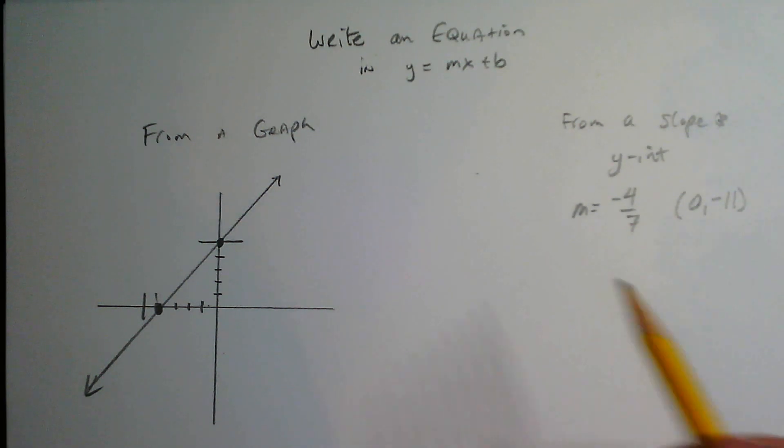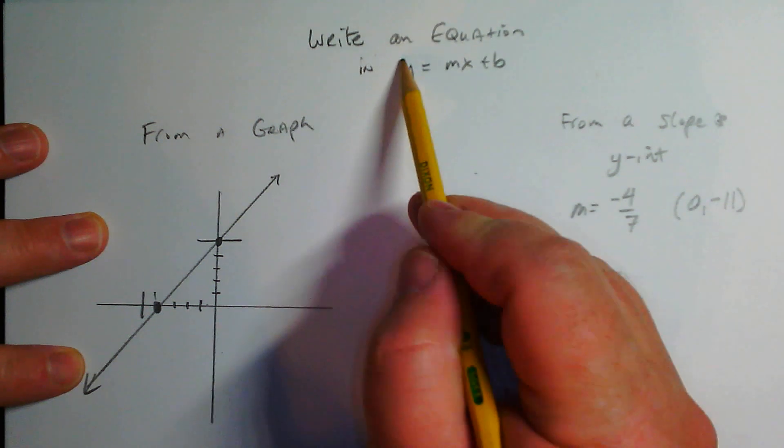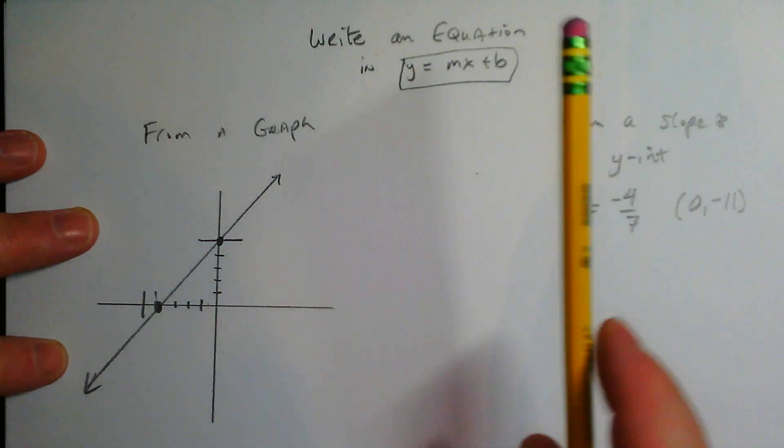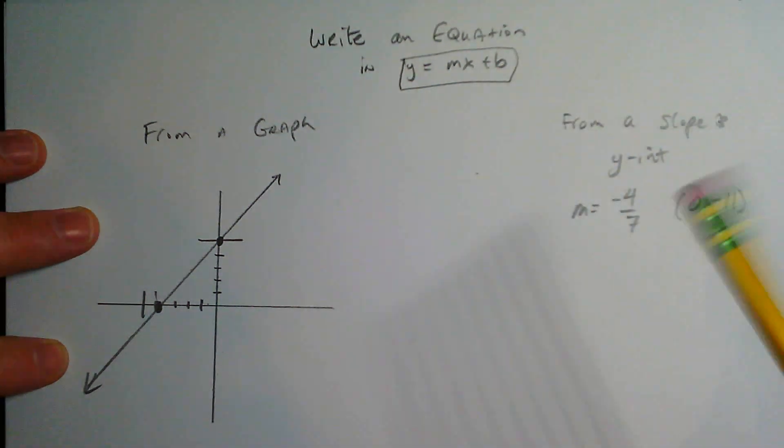Alright ladies and gentlemen, let's do a quick crash course part two: slope-intercept form, y equals mx plus b. Let's talk about how we're going to write the equation of a line in slope-intercept form.